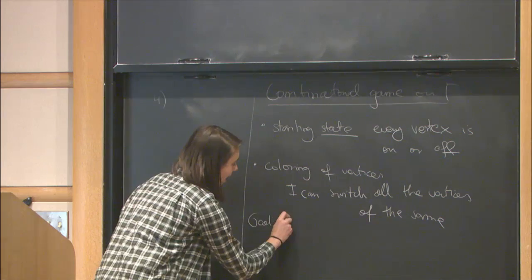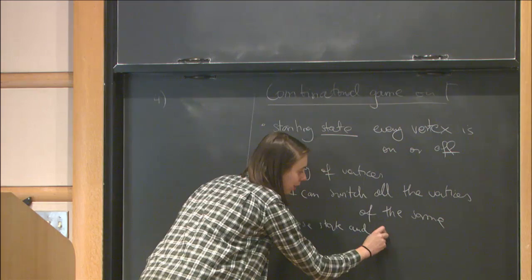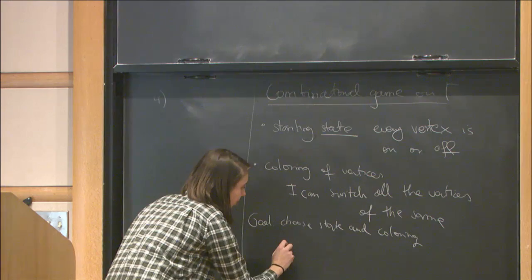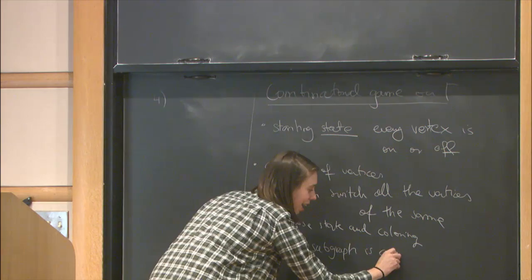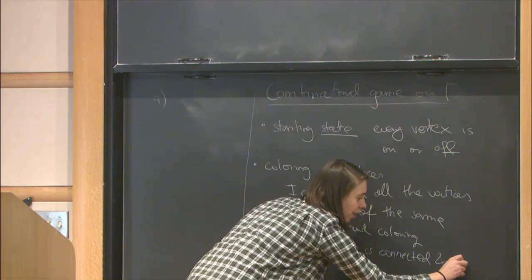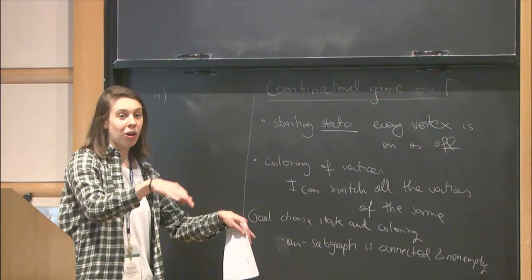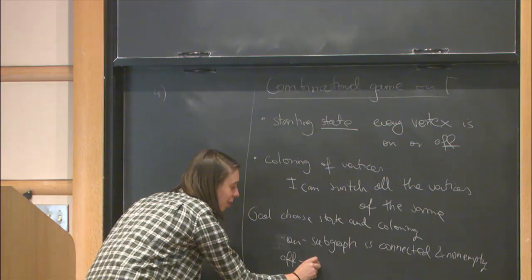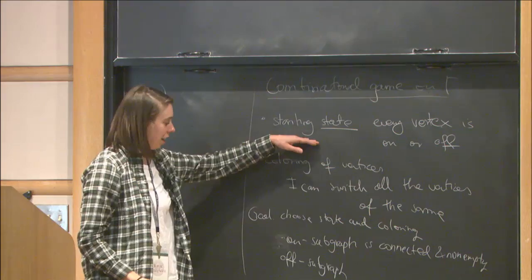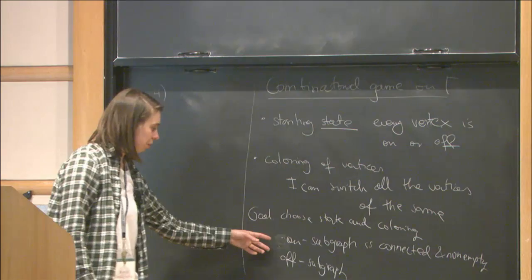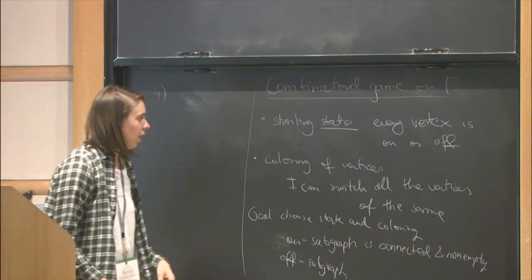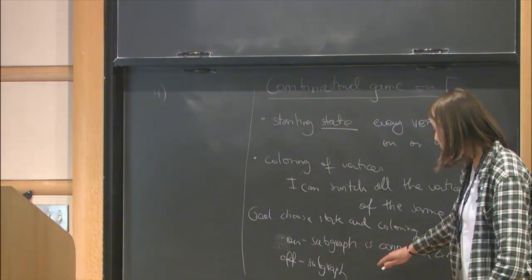The goal is to choose a state and coloring such that: the on-subgraph (induced by all 'on' vertices) and the off-subgraph (induced by all 'off' vertices) are both connected. On and off is really a partition into two subsets, and we want both induced subgraphs to be connected.